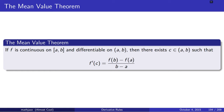This is why it's called the mean value theorem — it deals with average slope. The word mean means average in this case.